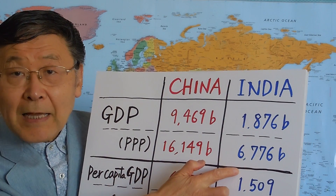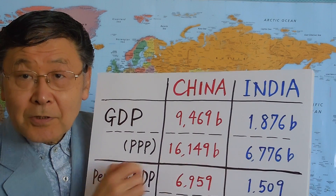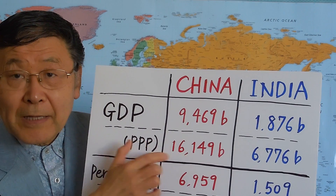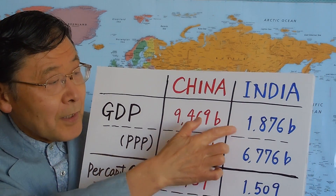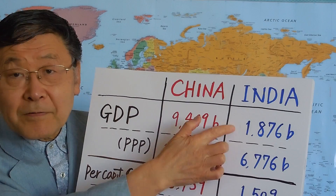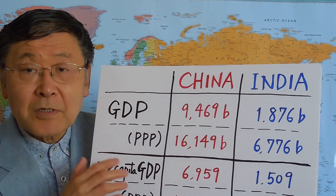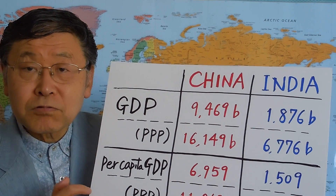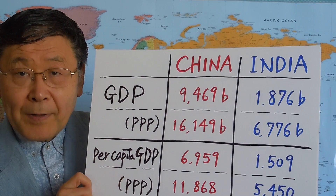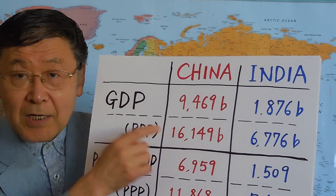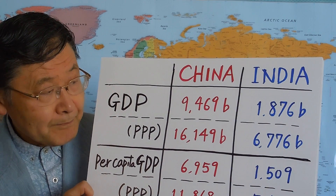India's real GDP is a little less than half — certainly more than one-third of that in China. This difference between nominal and real is huge for India because of the very low price levels there compared to China, or certainly compared to the United States.